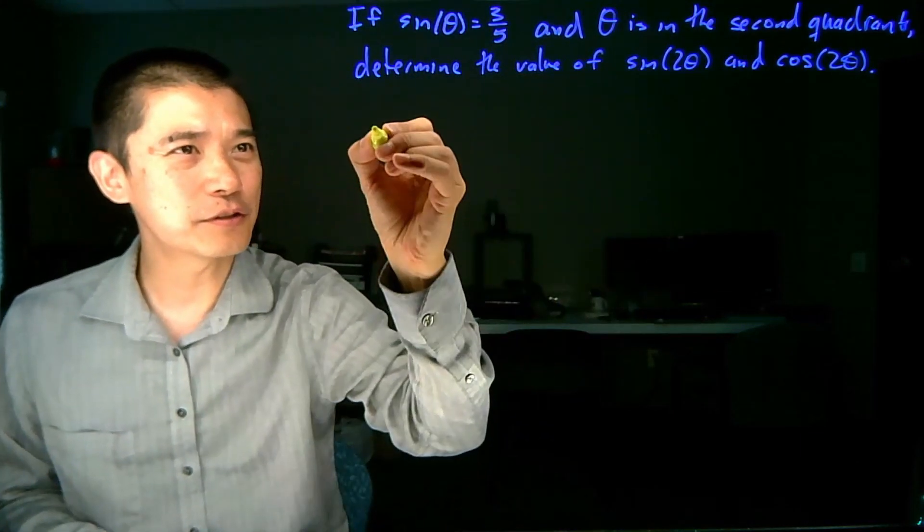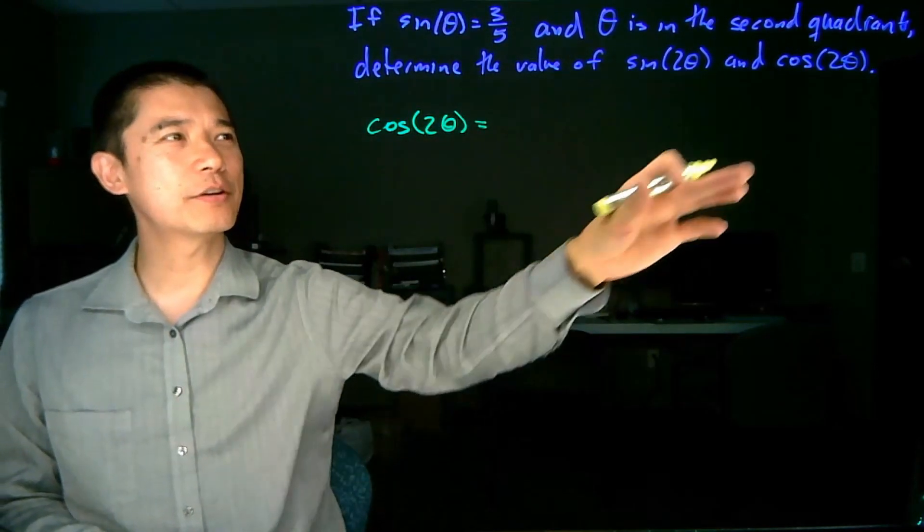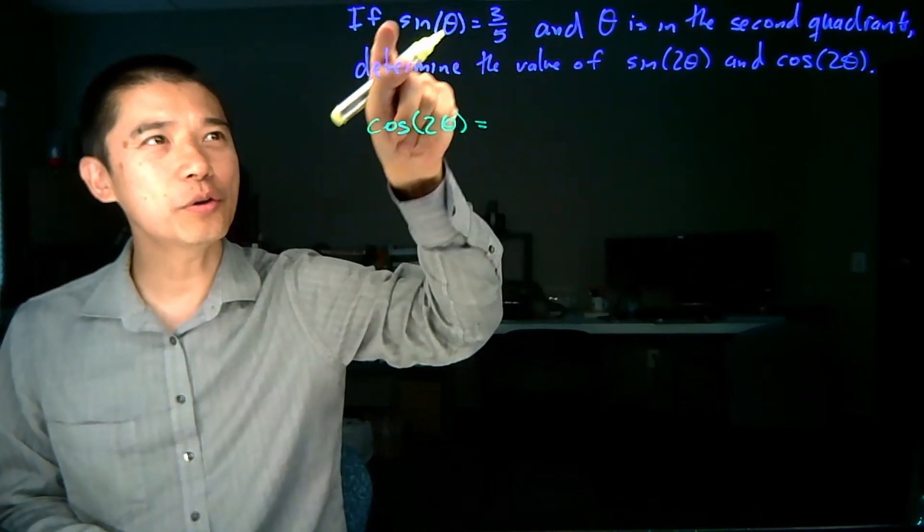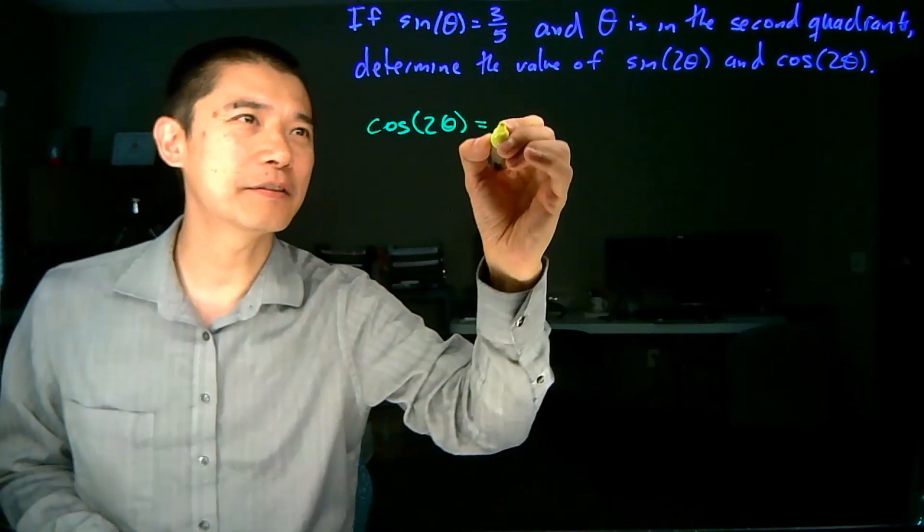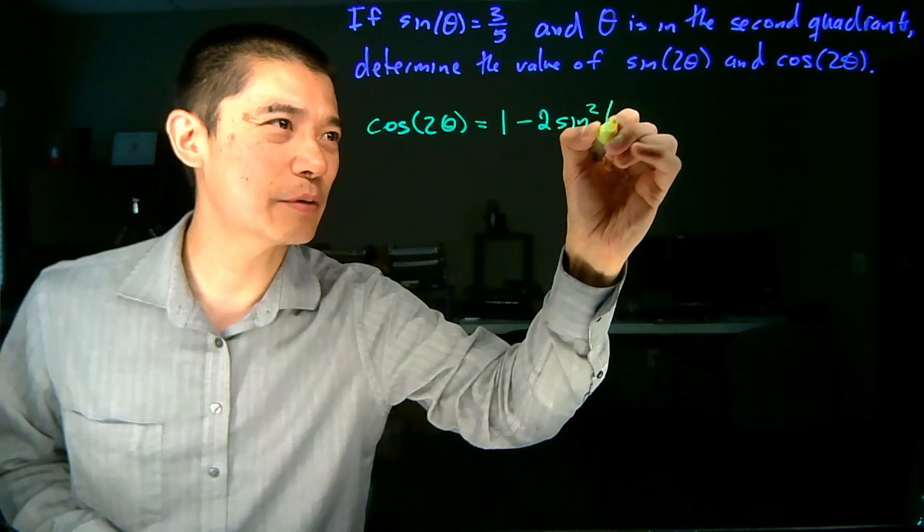Now it turns out for the cosine of 2 theta, we can calculate this right away. And the reason why is because there's a representation of this that only refers to sine of theta. And so this is 1 minus 2 sine squared theta.